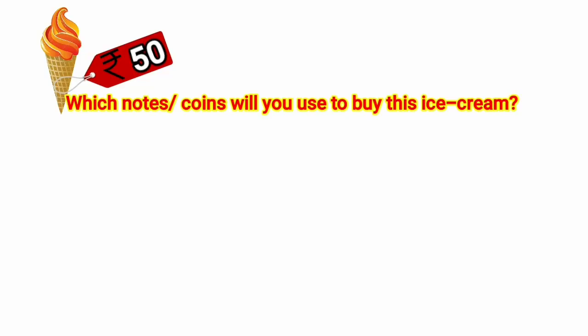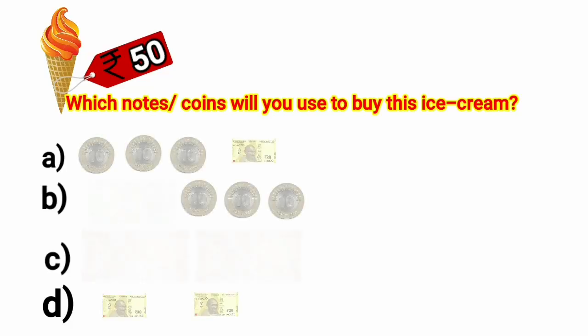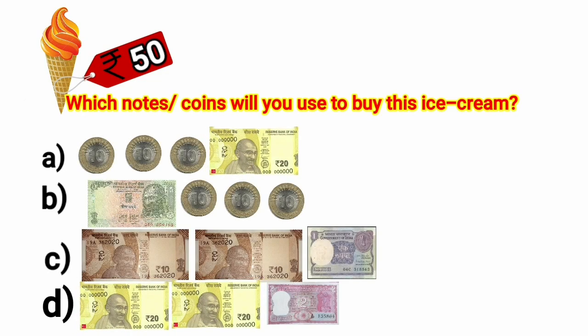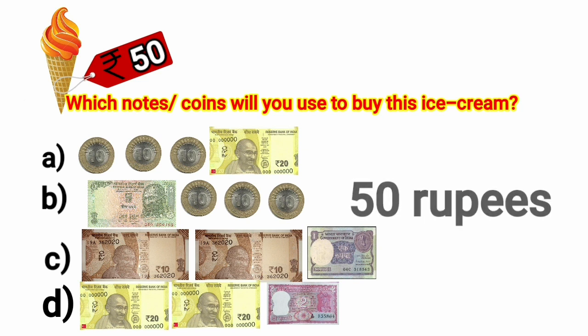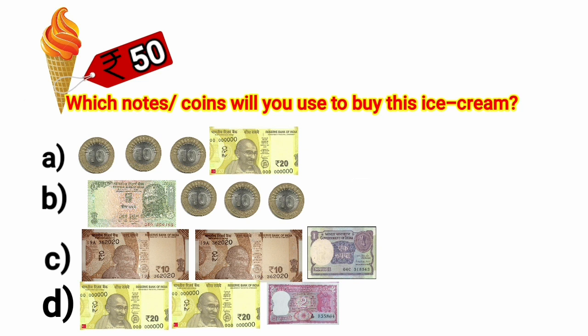Which notes or coins will you use to buy this ice cream? What's the cost of this ice cream, kids? It is for 50 rupees. Let's count the value of currency given at option A.